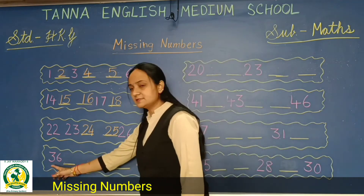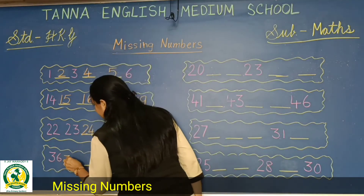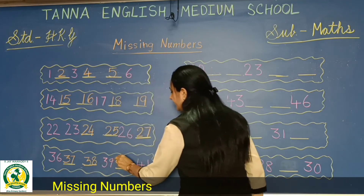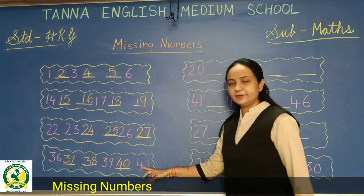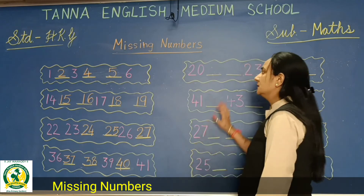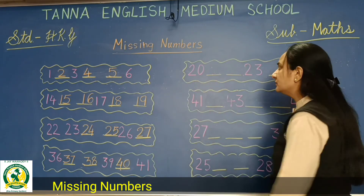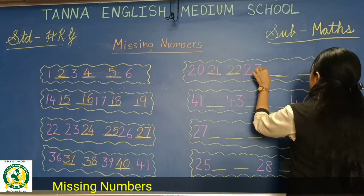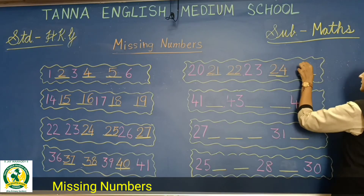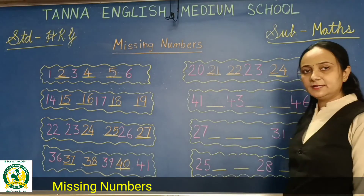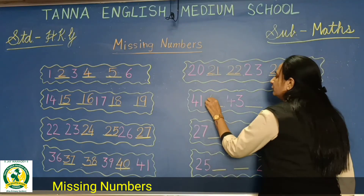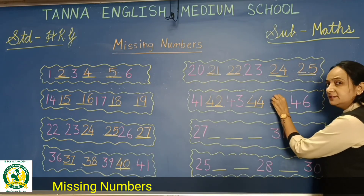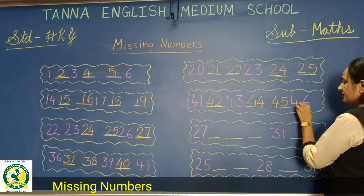Then 36 is written. So what will come after 36? 37. Then yes, 38, 39, and 40. Then 41, 42, 43, 44. Yes, 45 and 46 is written.